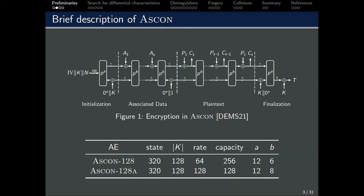We will start off with a brief description of ASCON. ASCON is a family of authenticated encryption schemes. In the current NIST lightweight cipher competition, two instances of the family, ASCON-128 and ASCON-128a, are among the finalists. The encryption process, as well as the various parameters of ASCON, are shown here.